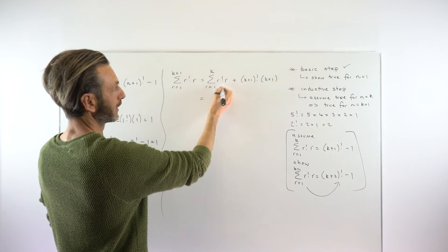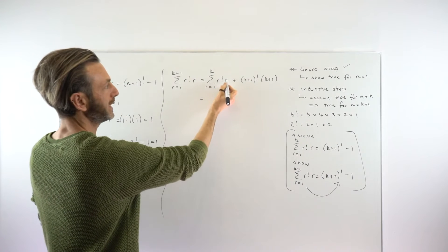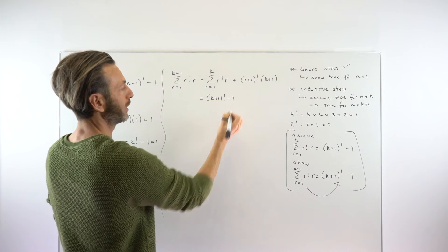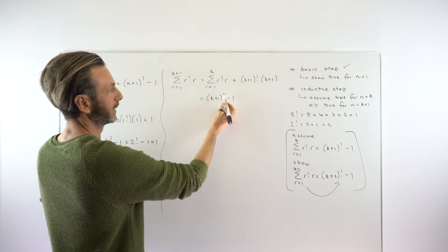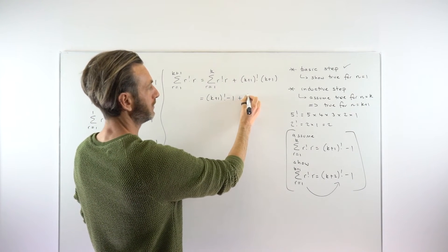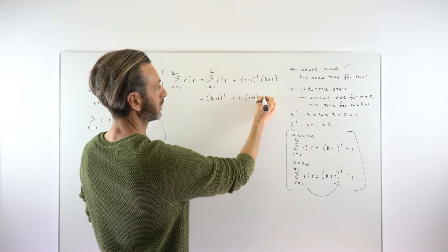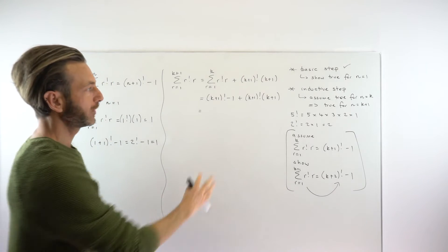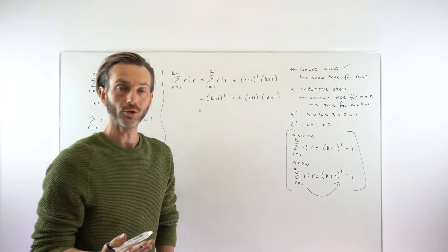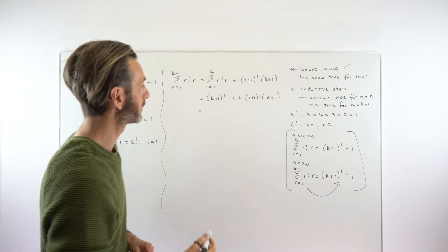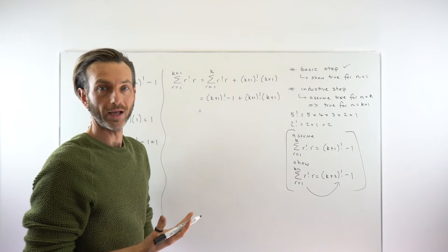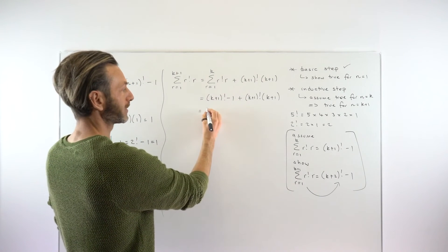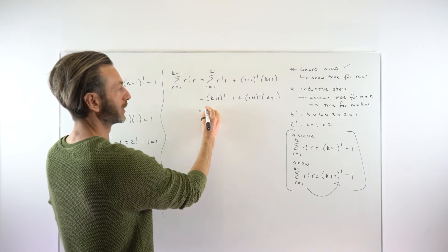This now matches up with the part we're allowed to assume. We know from our assumption that the sum from 1 to k is equal to k plus 1 factorial minus 1. So we replace that sum with k plus 1 factorial minus 1, and then we still have the k plus 1 factorial times k plus 1 term. This is always the challenging part — how do you get from here to the target expression? It depends on the question, and these can be about a wide range of things. Sometimes you have to play around with the algebra until you get where you need to be.